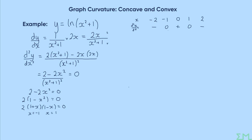The second method is to sketch y = 2 − 2x², which is a downward parabola with roots at x = −1 and x = 1. From the sketch, we can see directly that the function is positive between −1 and 1, and negative outside. This is quicker if you can sketch it easily, but if the second derivative isn't a function you can easily sketch, use the table method.